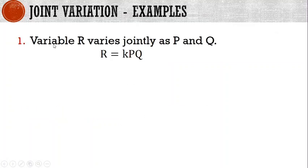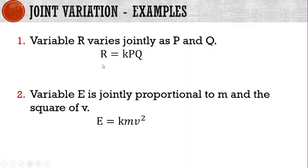For joint variation example one, a variable r varies jointly as p and q, so the equation is r equals kpq. In example two, variable e is jointly proportional to m and the square of v, so e equals kmv raised to the power of 2.